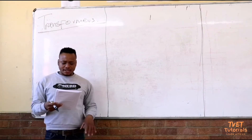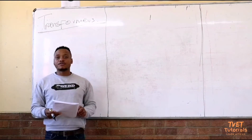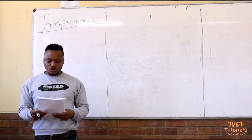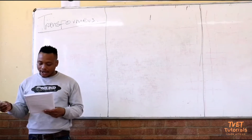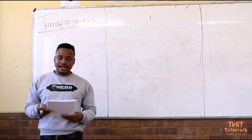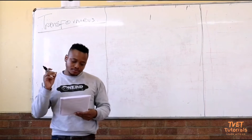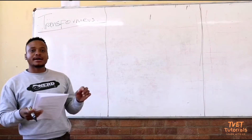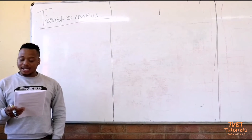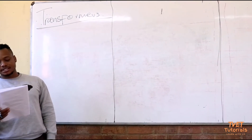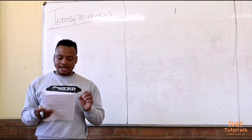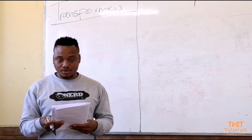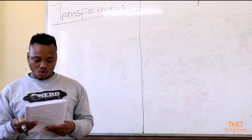Essentially, the transformer is made up of two windings: the primary and secondary windings. The primary and the secondary windings are electrically isolated from each other, but they are magnetically coupled to the core.